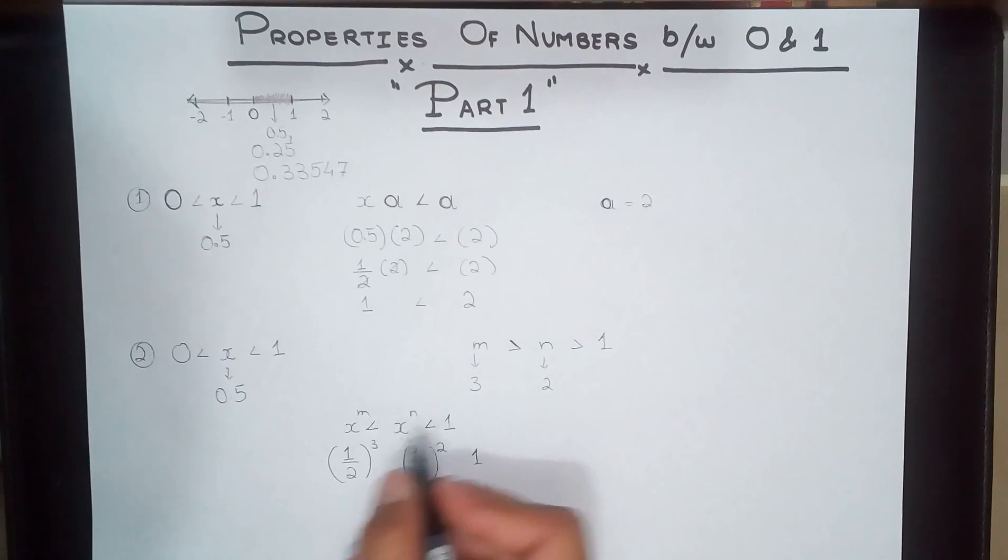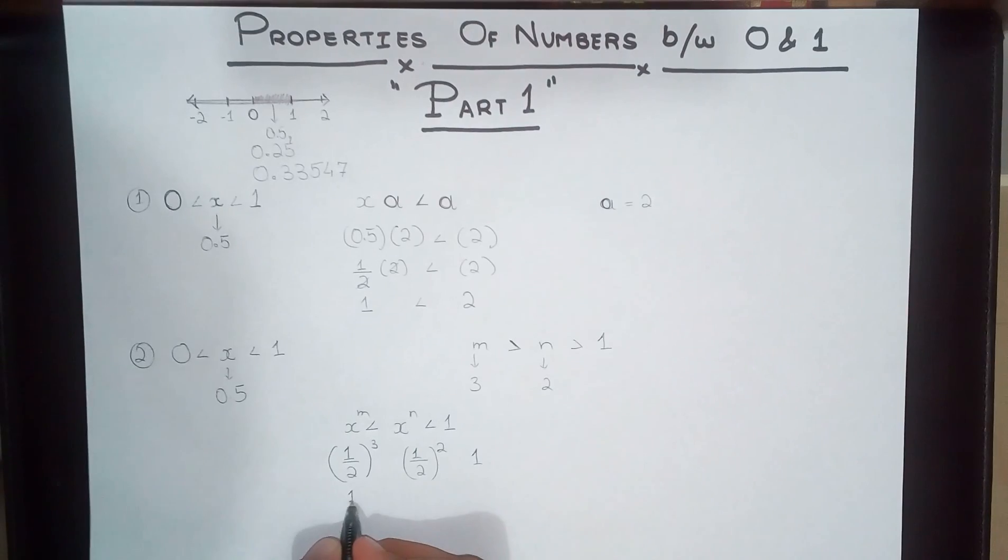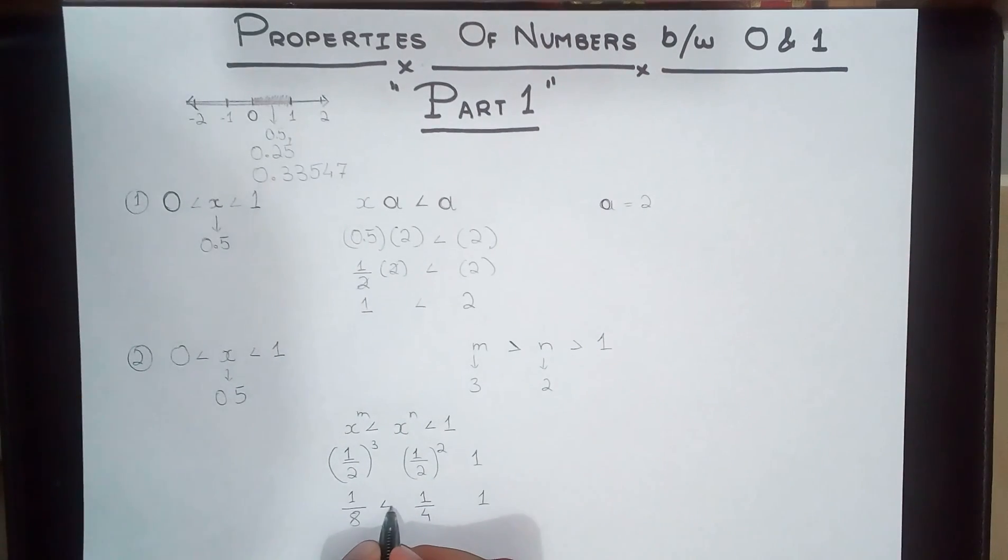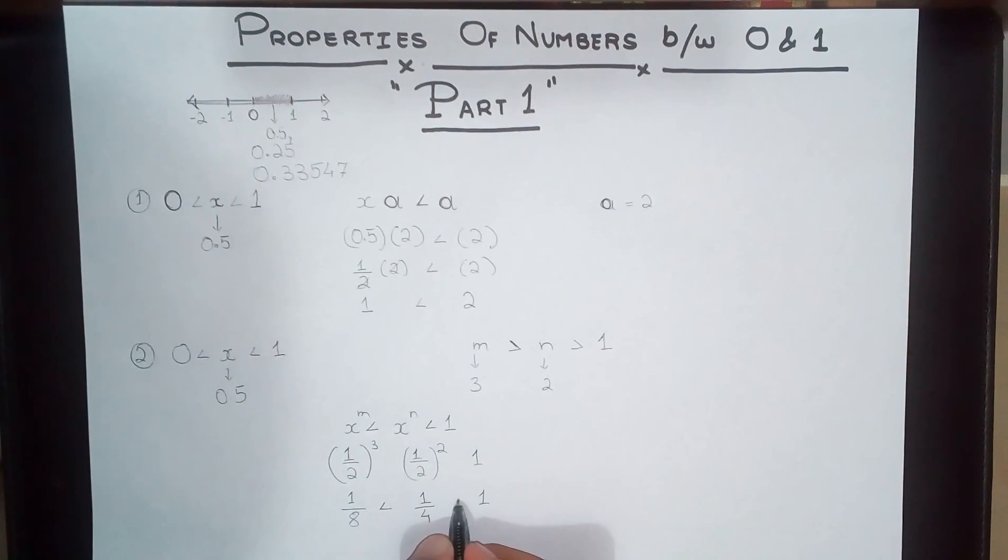And we have 1. Let's see if this inequality actually holds. Now 1 cubed is 1, and 2 cubed is 2 times 2 times 2, that is 2 times 2 is 4, and 4 times 2 is 8. Now 2 squared is 4 and 1 squared is always 1. Now as you can see, the inequality actually does hold true. 1 by 4 is greater than 1 by 8, and 1 is actually greater than 1 by 4.